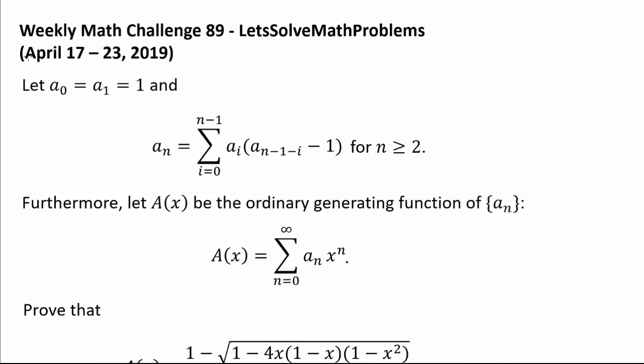We begin this challenge problem with a recurrence relation. Let a₀ and a₁ be 1, and a_n be the sum from i equals 0 to n minus 1 of aᵢ times a_(n-1-i) minus 1.